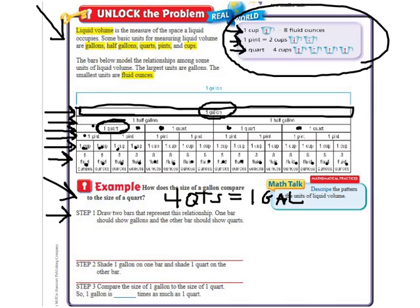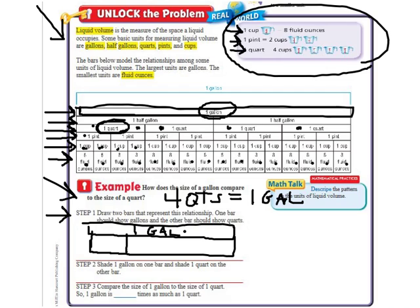Here they want you to work it out by drawing the bars to represent the relationship. So we'll draw what we saw up there. One big gallon bar is equal to four quarts. Each of these are quarts. So if step two says shade one gallon on one bar and shade one quart on the other bar, if we were to color in this gallon and if we were to color in this quart, we would see that the gallon is four times bigger than the quart.